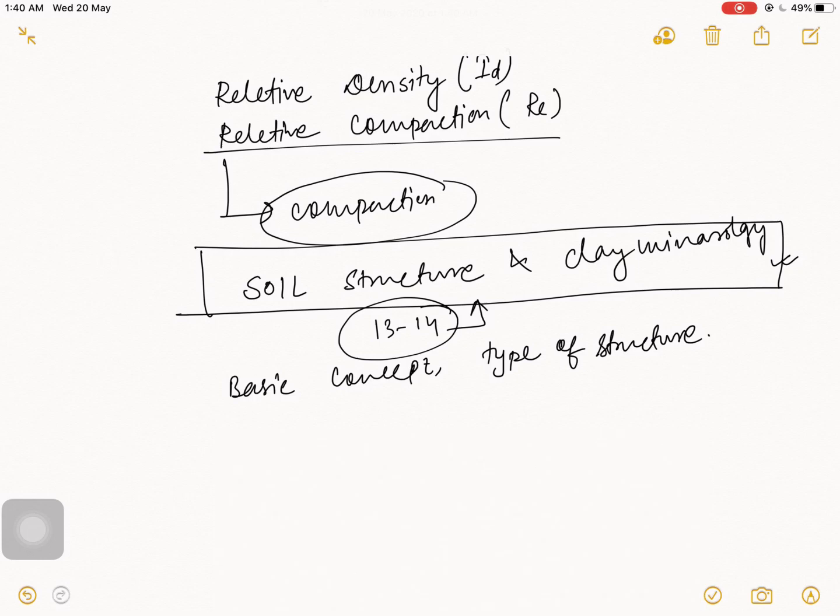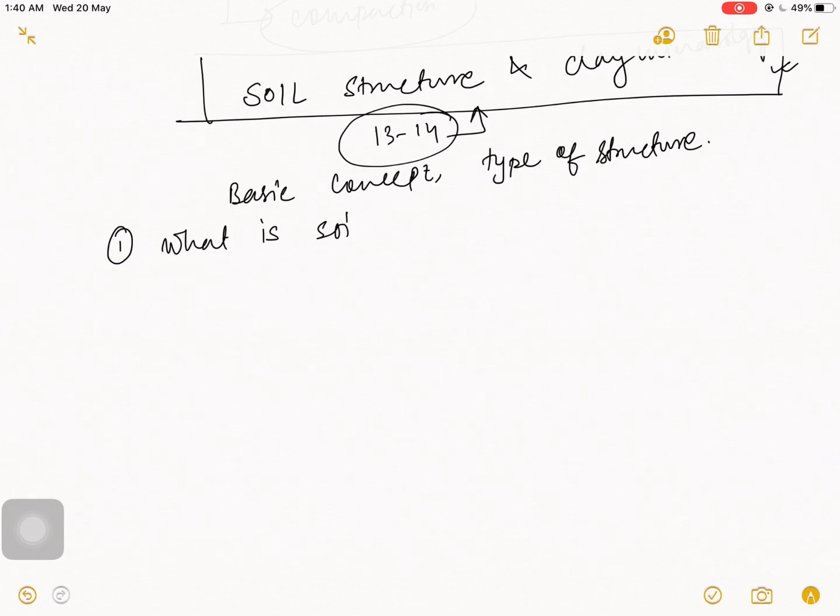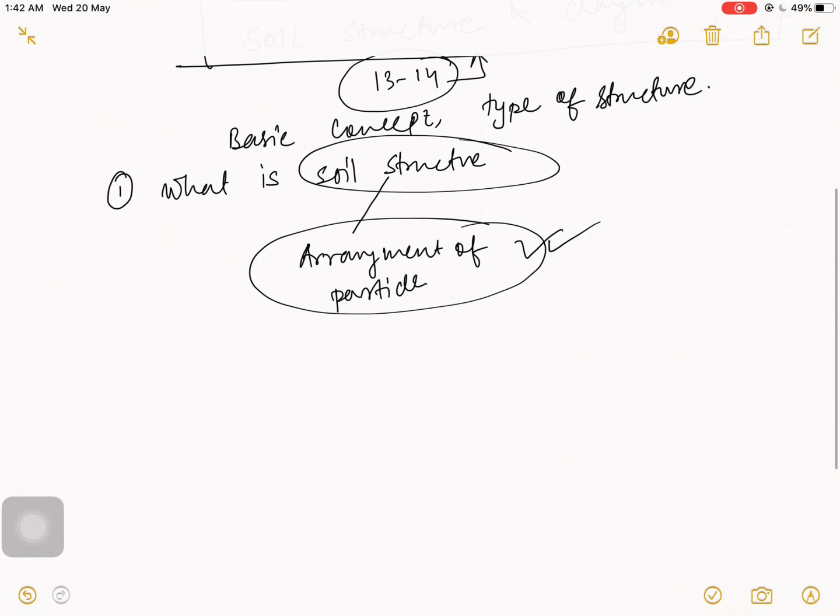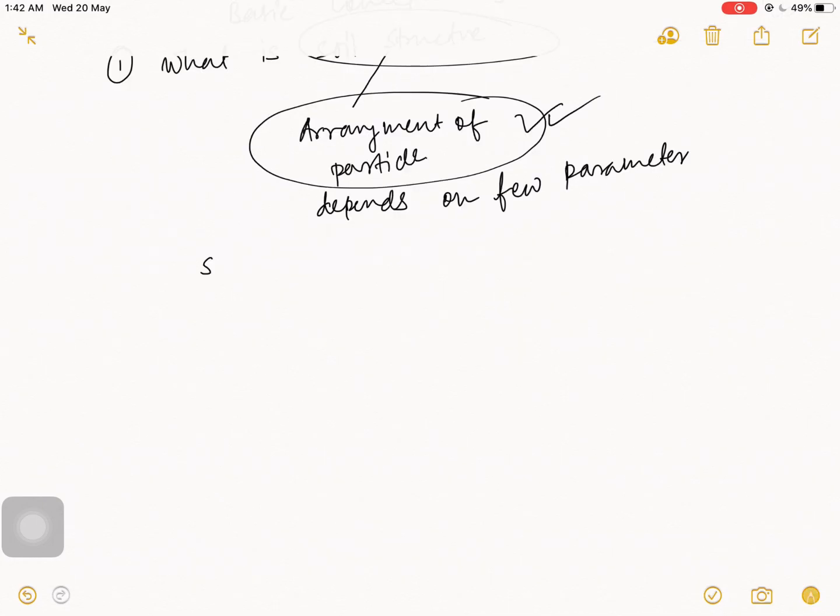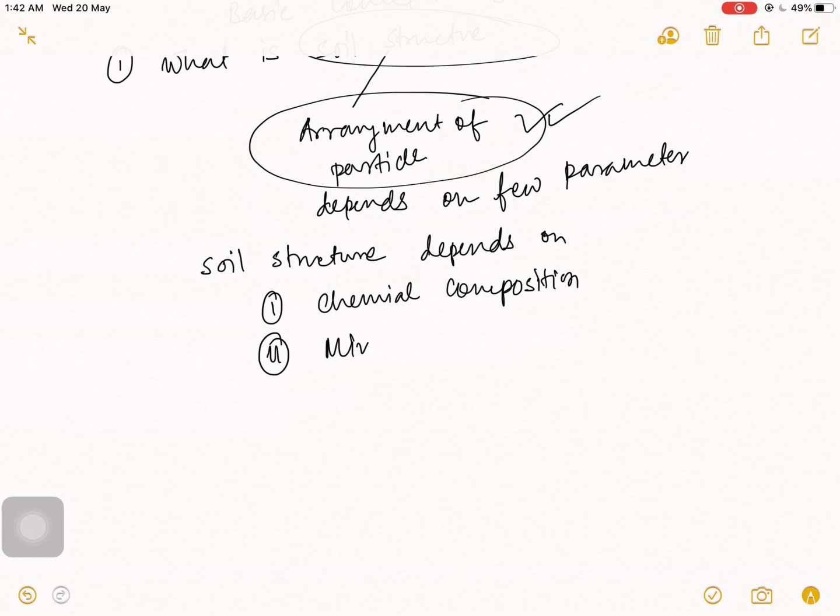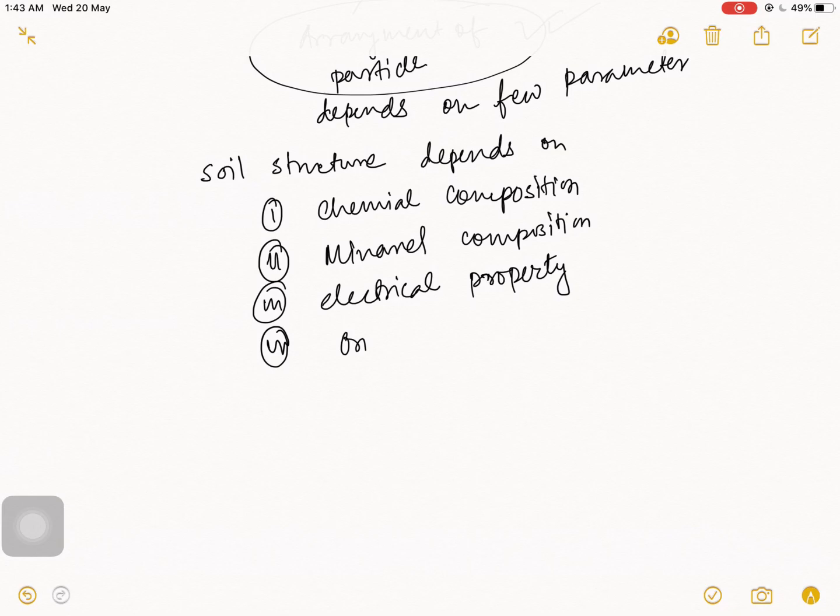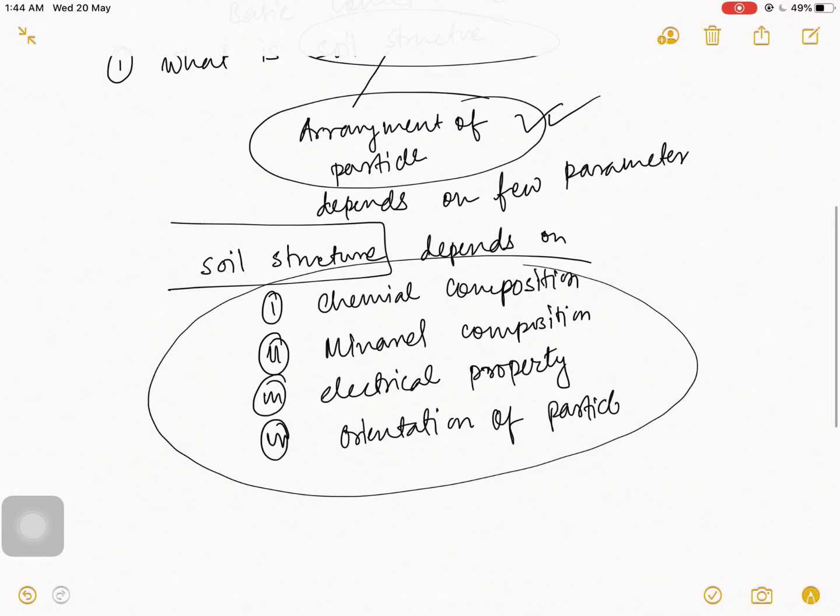So first, what is soil structure? Soil structure means type of arrangement of particles. This arrangement depends on few parameters, depending factors of soil structure. Soil structure depends on first chemical composition, mineral composition, electrical property, orientation of particle. These are four main points which are key to soil structure dependence.